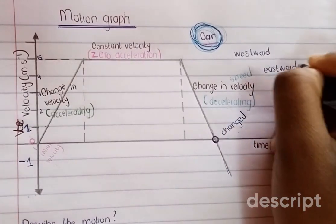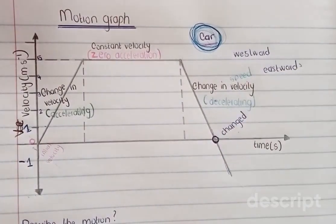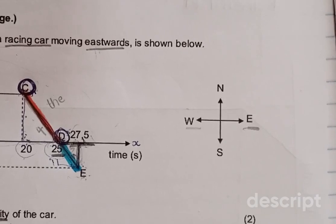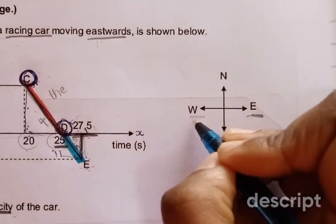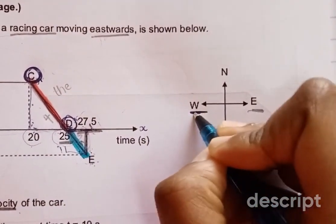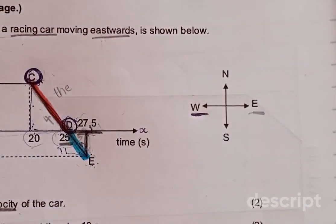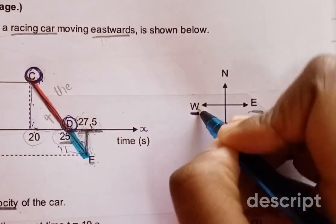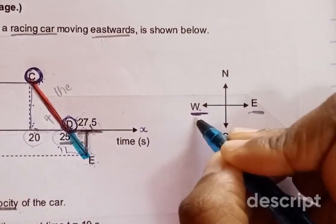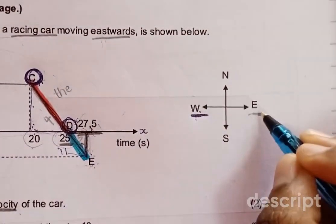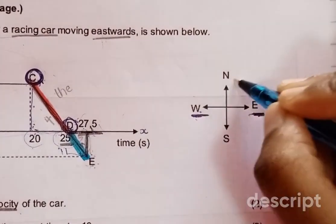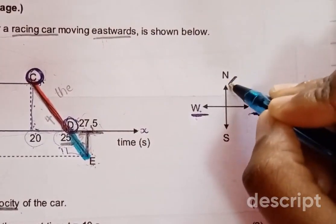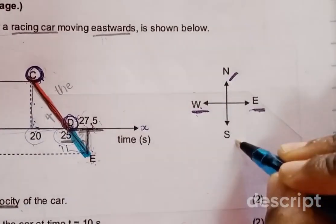So guys, we'll look at past paper questions, but before that I want to show you this. The car was moving westwards and then it changes its direction, now moving in the opposite direction — the opposite of west is east. If the car was moving north, it changes its direction and now it's moving south.